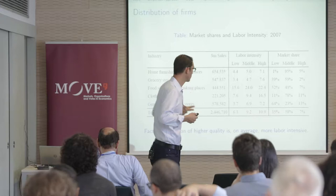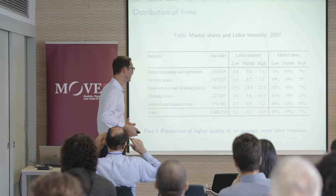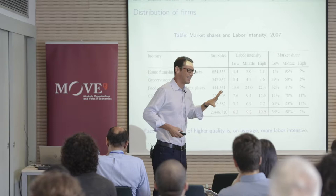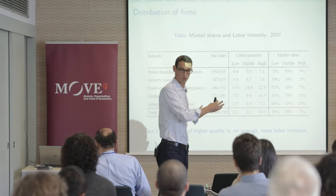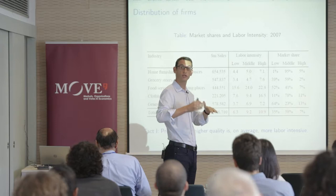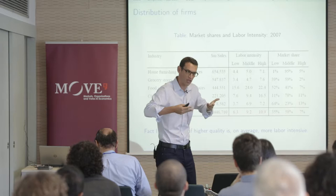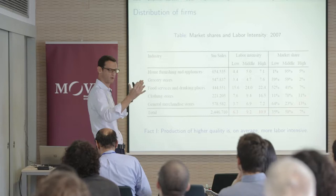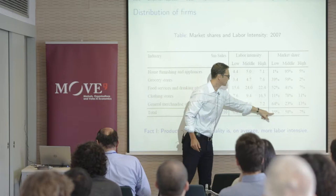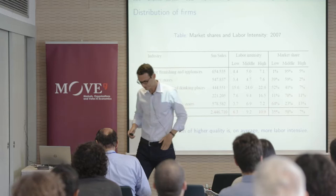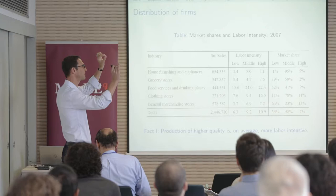There's a secondary effect: higher quality firms not only use more workers, they also use more skilled workers. That's something you can't get from CompuStat, but we have a separate dataset showing that. Higher quality goods use not only more labor but more skilled workers — that's in a companion paper. In 2007, the share of low quality in these sectors was 35%, middle was 58%, and high was 7%.